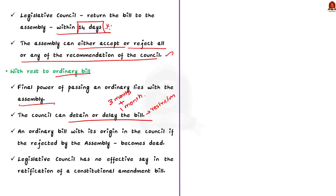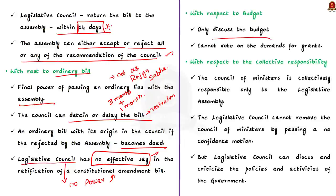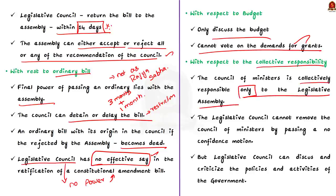The council is not even a revising body like the Rajya Sabha. An ordinary bill originating in the council will be sent to the assembly, but if the assembly rejects the bill, it becomes dead. In certain constitutional amendment bills where ratification by states is necessary, the council has no effective control — the will of the assembly prevails. Third, with respect to budget: the council can only discuss the budget; the legislative council cannot vote on the demands for grants. Fourth, with respect to collective responsibility: the council of ministers are collectively responsible only to the legislative assembly. The legislative council cannot remove the council of ministers by passing a no-confidence motion, though it can discuss and criticize the policies and activities of the government.